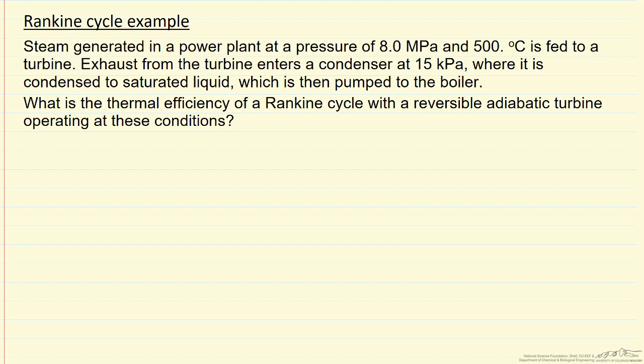Here we're going to look at a basic Rankine cycle where we're going to generate steam in a boiler at high pressure and high temperature. We're going to feed that to a turbine to generate work, and then condense the steam, re-pressurize it, and pump it back to the boiler. The question is, for this cycle, for the conditions we're given here, what's the thermal efficiency if the turbine is adiabatic and reversible?